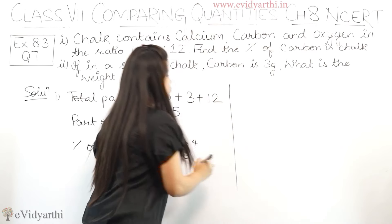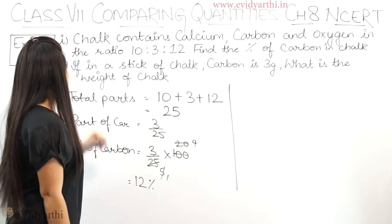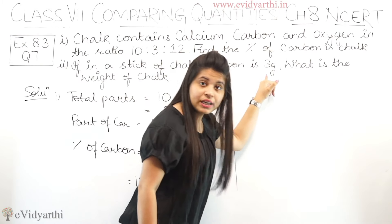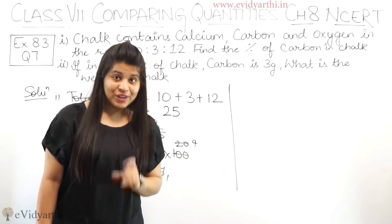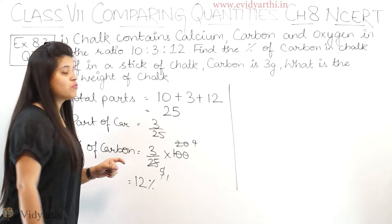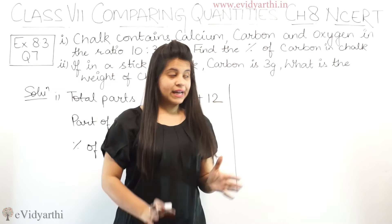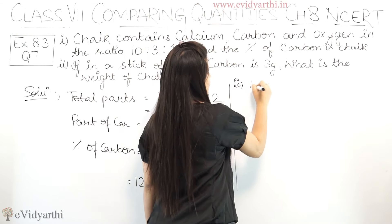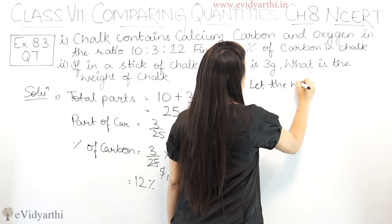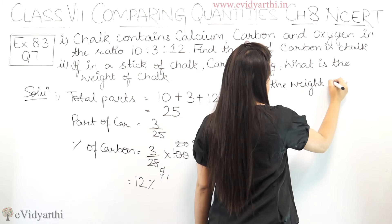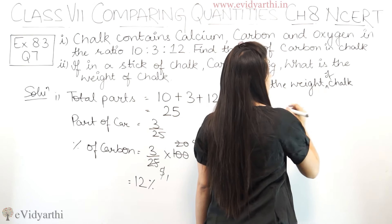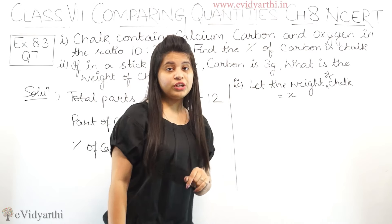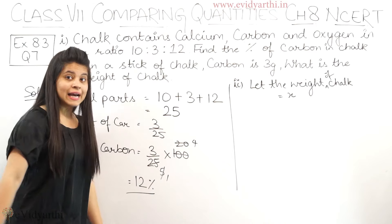This was the first part. अब आ जाते हैं second part पे. The second part says: if in a stick of chalk, carbon is 3 grams, what is the weight of the chalk? अब chop का weight find करना है. Let the weight of chalk be x.